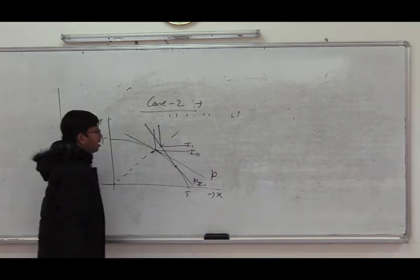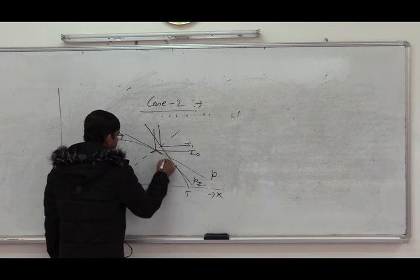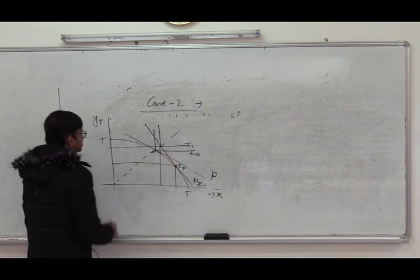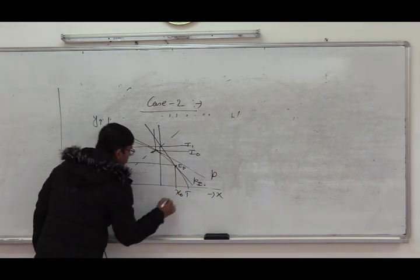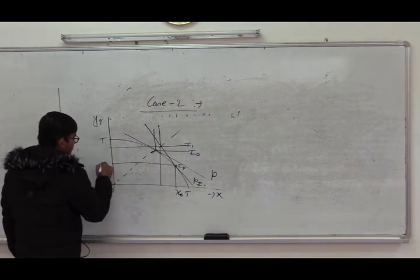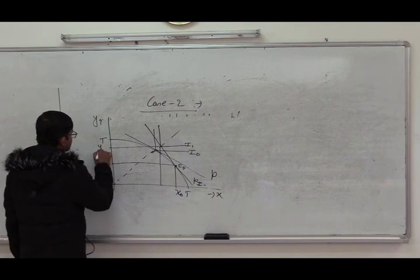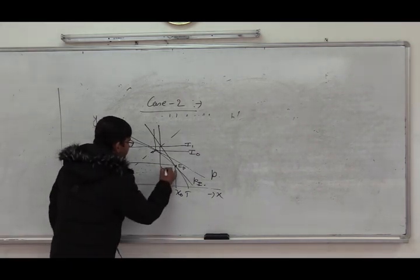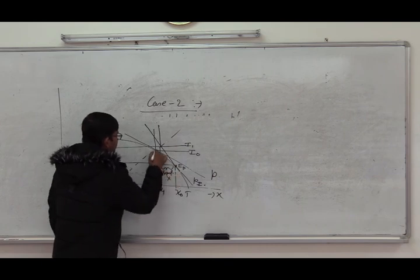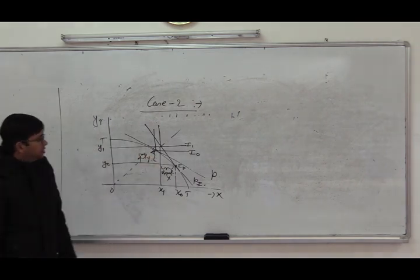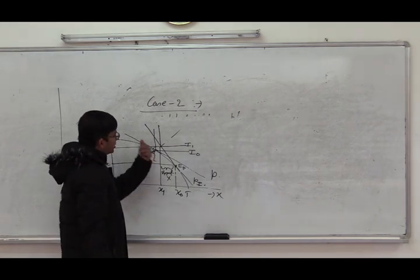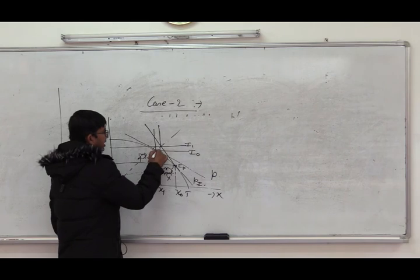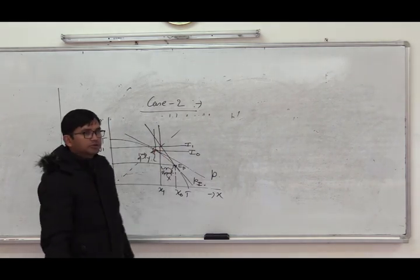A new equilibrium is attained on the higher indifference curve I1. The post-trade production point shifts and the country produces x0 of x and y0 of y, while consuming x1 units of x and y1 units of y. This means the country exports x and imports y. The entire gain comes from changing the production point — specialization in commodity x — so the entire gain is called the specialization gain and there is no exchange gain.